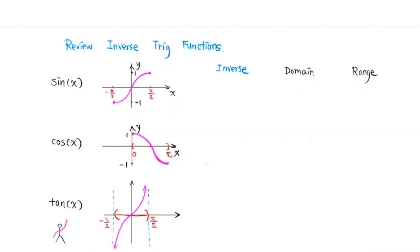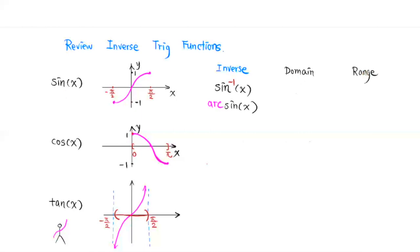For the sine function, when we restrict its domain from negative pi/2 to pi/2, then this part of the sine function is 1 to 1, and it will have an inverse. The inverse function of sine is denoted by inverse sine, or arcsine. And remember, when two functions are inverse functions, their domain and range will be switched.